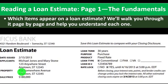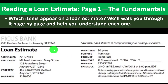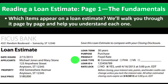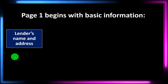Reading a loan estimate, page one: the fundamentals. Let's walk through what items appear on a loan estimate, page by page. Page one includes the issue date, the applicant's property, the sale price, the loan term (e.g., 30-year), purpose (purchase), product (fixed rate), loan type (conventional, as opposed to FHA or VA), loan ID, and the rate lock. Locking the rate is generally a good idea in the current environment.